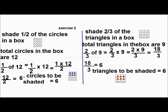We have shaded half of the circles in a box. Total circles in a box are 12. Half of 12 is called half into 12. Multiply the numerators: 1 into 12 by 2, that is 12 by 2, which is equal to 6. Circles to be shaded is 6.